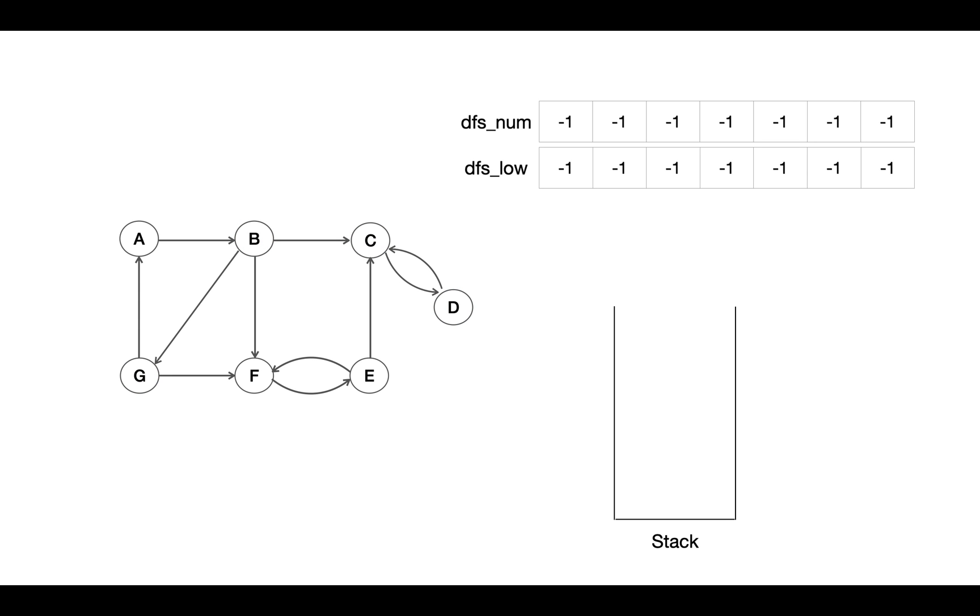Let's understand the whole process with our example and see how it actually works. So we have this stack and we start exploring nodes with DFS traversal. While traversing, we assign DFS number for each node and a DFS_low value equivalent to that DFS number.